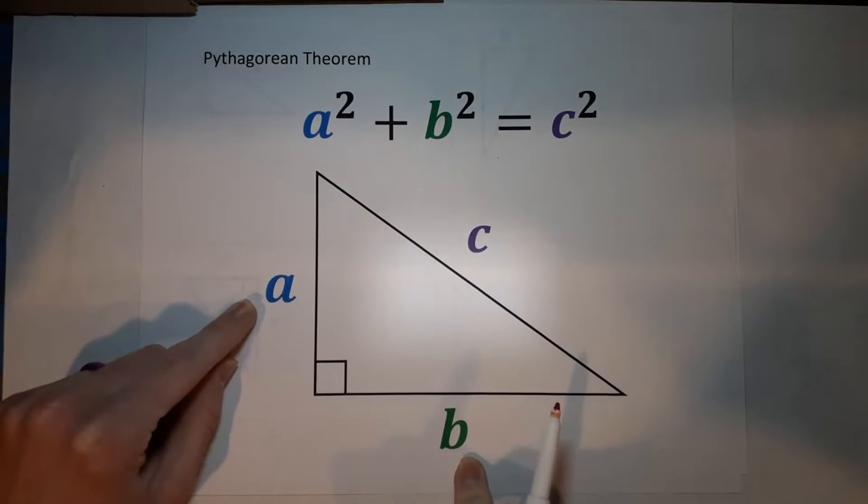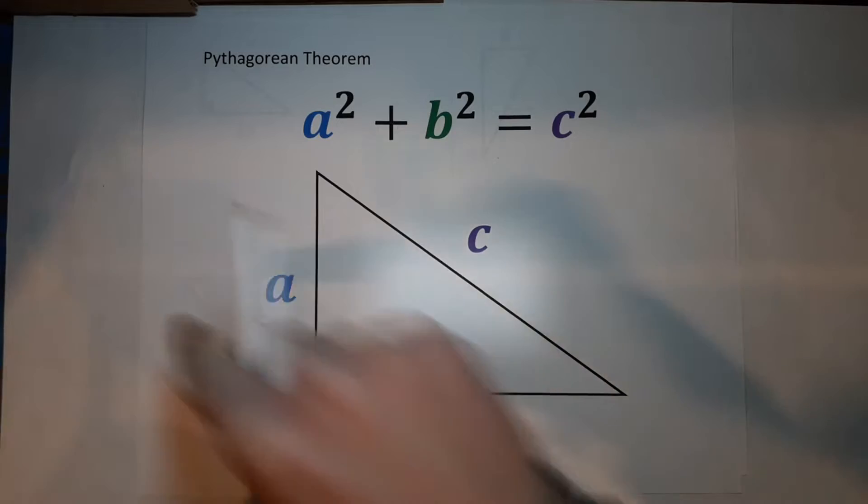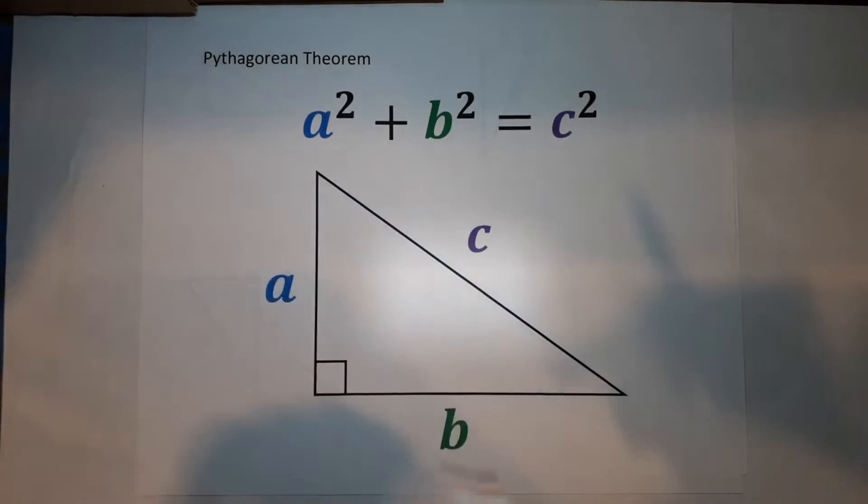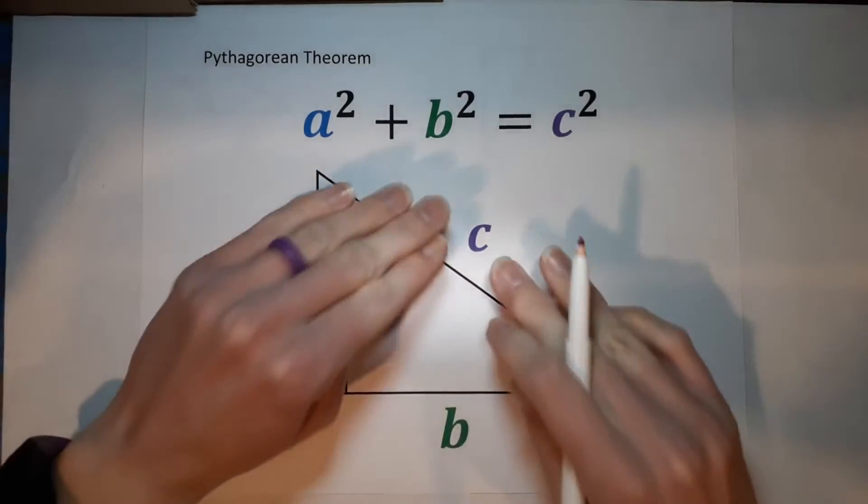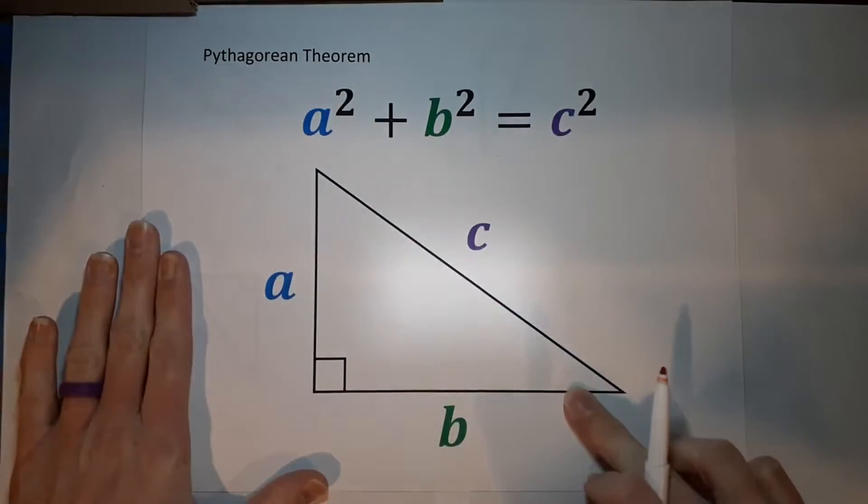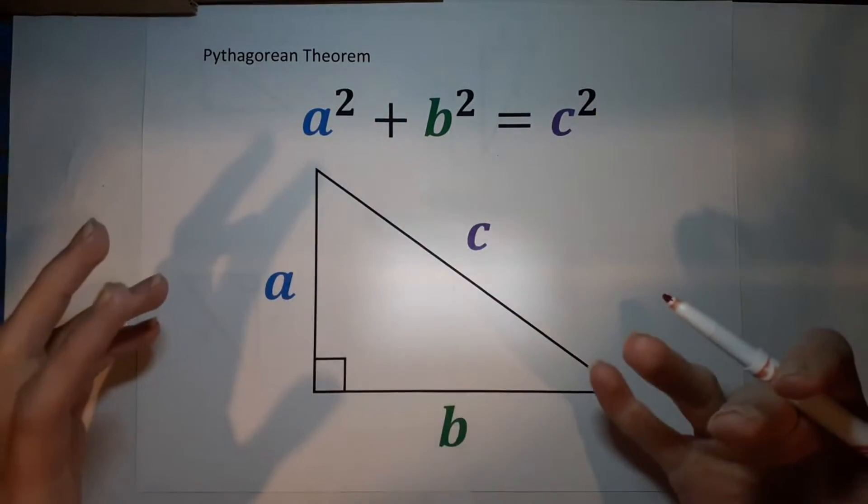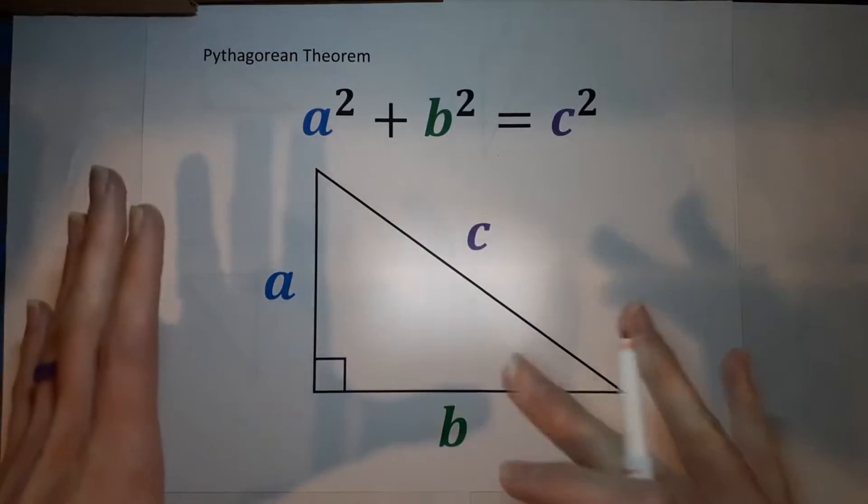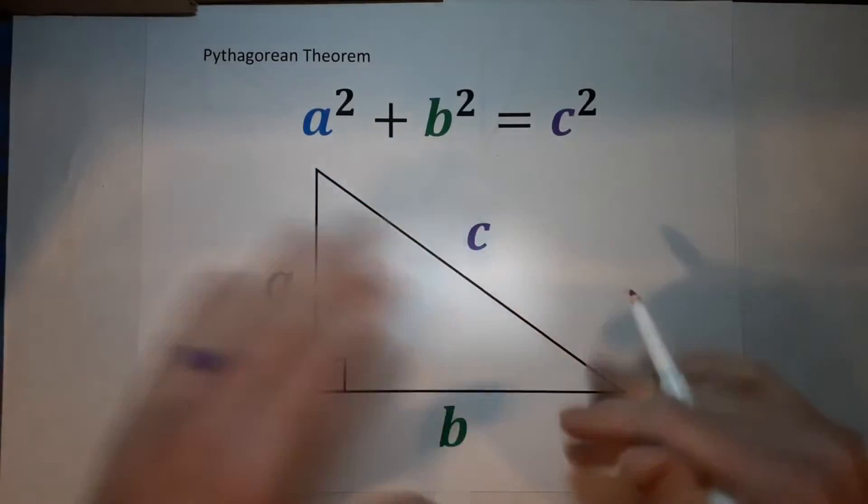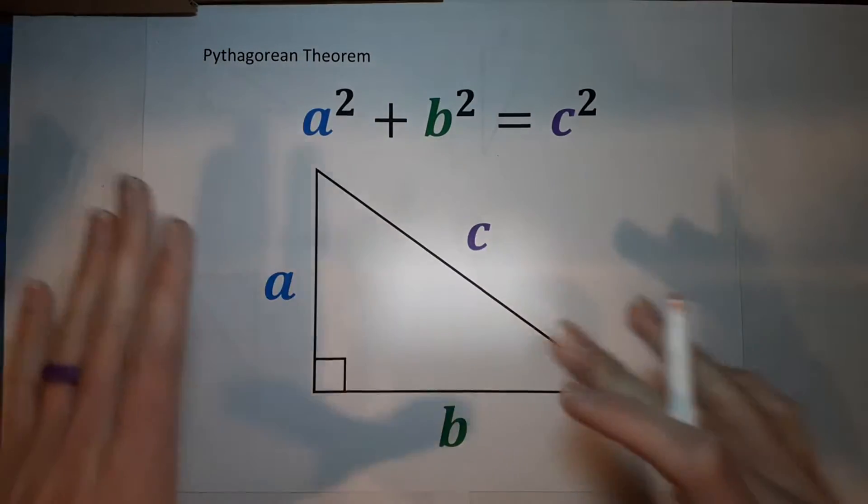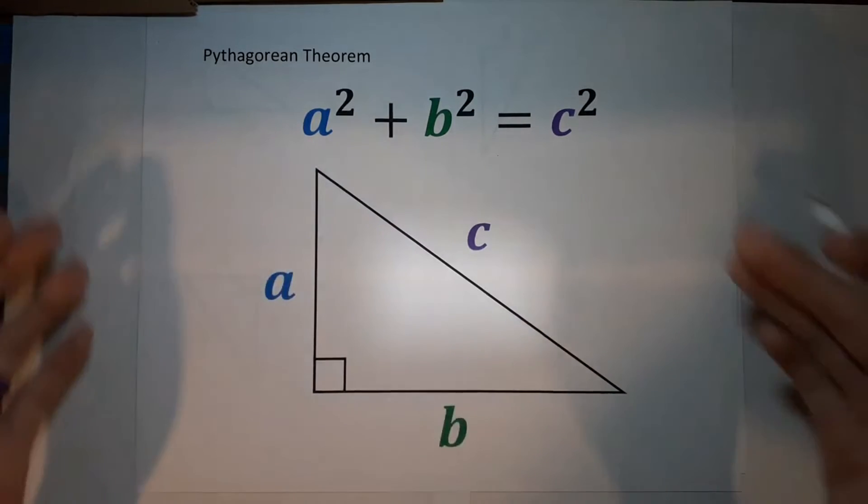A and B are the legs. It doesn't matter which one is which, you can swap them. But it is very important that C is the hypotenuse. It's also going to be your longest side. Sometimes if you don't have a picture and they'll just have numbers for you, the hypotenuse is always the biggest one.